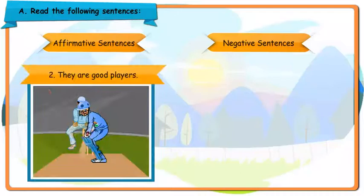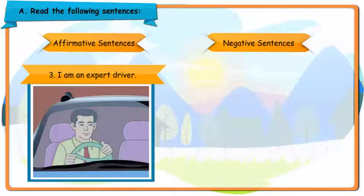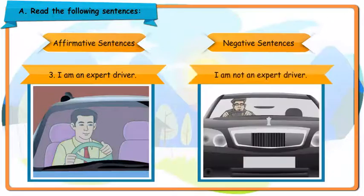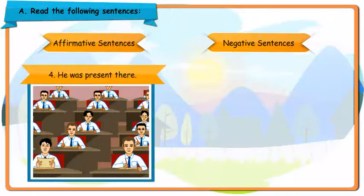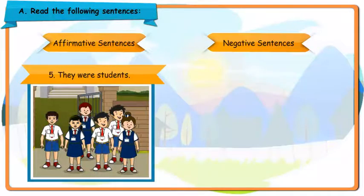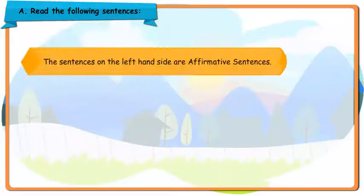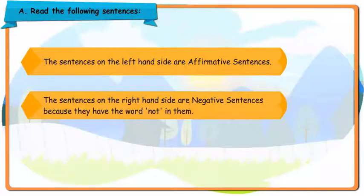They are good players. They are not good players. I am an expert driver. I am not an expert driver. He was present there. He was not present there. They were students. They were not students. The sentences on the left-hand side are affirmative sentences.